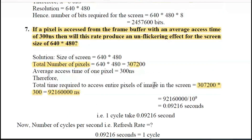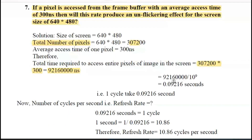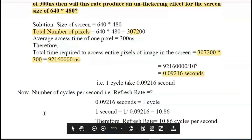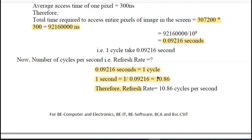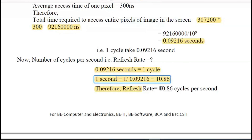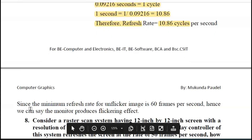Now, the number of cycles per second — that is, the refresh rate — is calculated. The number of cycles that complete in one second is determined. The result is 10.86 cycles per second. Since the minimum refresh rate for an unflickered image is 60 frames per second, we can say the monitor produces a flickering effect, because the calculated refresh rate of 10.86 cycles per second is below the required 60 frames per second limit. This is important from the exam point of view.